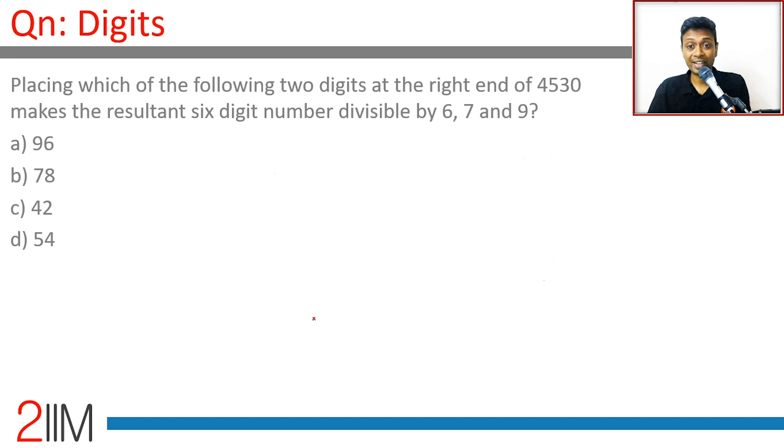Which of the following two digits at the end of 4530 makes the resultant number divisible by 6, 7, and 9? 4530 dash dash. This is a classic question which is best done by plugging in the answer choices.